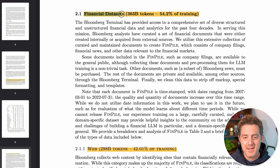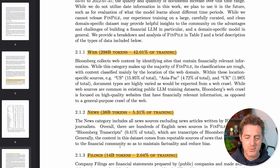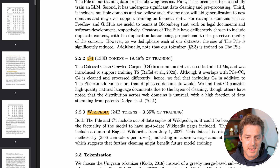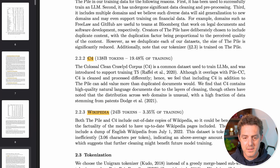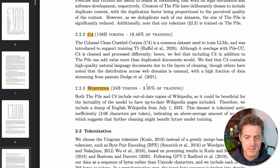The financial datasets are 363 billion tokens, about 54.2% of their training. The web is 42% of the training, news is 5%, and filings is 2%. The first public dataset is The Pile, which is used by GPT-Neo, another really popular LLM. Next, they have something called C4 — Colossal Clean Crawled Corpus — which is about 19.5% of their public data.